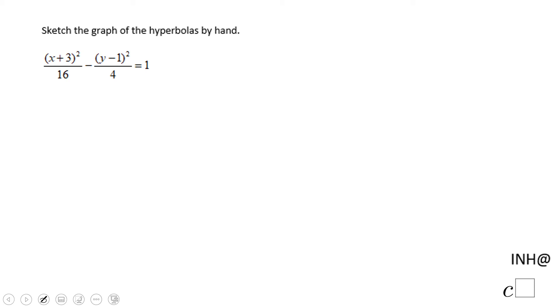Welcome back to I Need Help at C Squared. In this example, we have to sketch the graph of a hyperbola by hand. First of all, what you really want to find out is the center of this hyperbola, which is going to be negative 3. We see x plus 3, so that will be x minus negative 3, and positive 1.